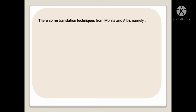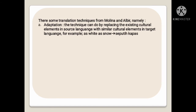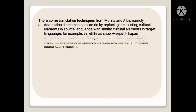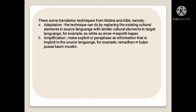There are several translation techniques developed by Molina and Albir. First is adaptation (adaptasi) — the technique of replacing cultural elements in the source language with similar cultural elements in the target language. For example, 'as white as snow' is translated as 'seputih kapas.' Next is amplification — making explicit or paraphrasing information that is implicit in the source language. For example: 'Ramadhan'.